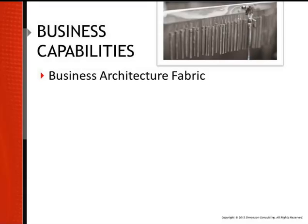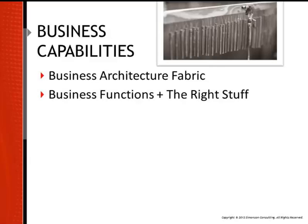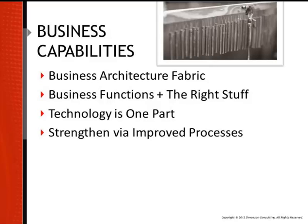Business capabilities are critical to Agile Business Architecture. Business capabilities make up the fabric of business architecture and are the mechanism for achieving business goals. You might think of business capabilities as business functions armed with the right stuff. Technology is just one part of the equation. There are many ways to strengthen business capabilities — one way is to focus on process.